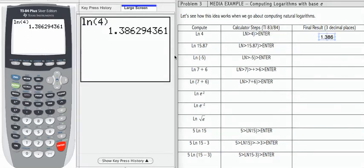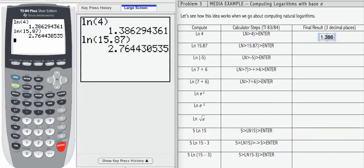Let's try the next one. Natural log of 15.87. The first parentheses is given to me; I need to add the second one. Enter. 2.764 rounded to the third decimal place.